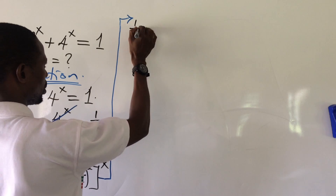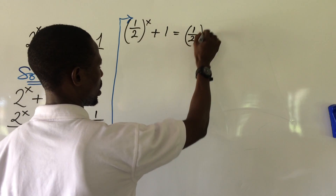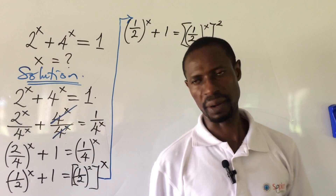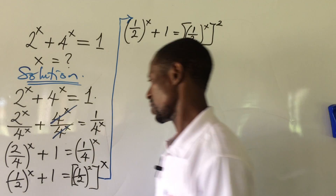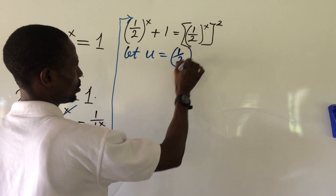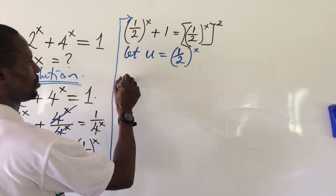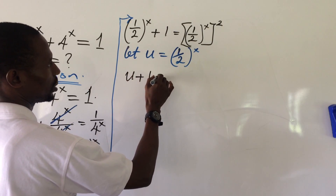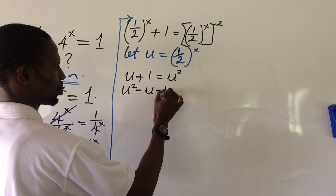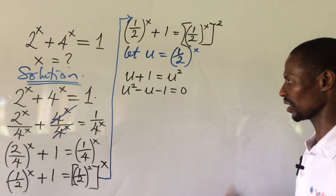We're going to have 1 all over 2, all to the power of x, plus 1, equal to 1 all over 2, all to the power of x, all squared. At this point we bring in a substitution: let u equal 1 all over 2 to the power of x. So whenever we see 1 all over 2 to the power of x, we put u there, and our expression becomes u plus 1 equal to u squared. Rearranging gives us u squared minus u minus 1 equal to 0. This is a quadratic equation, and we cannot use factorization to simplify it.